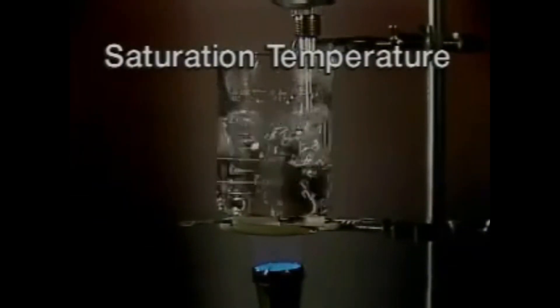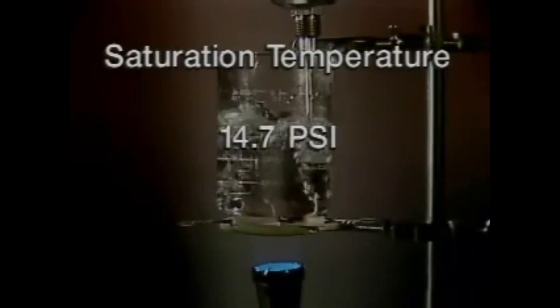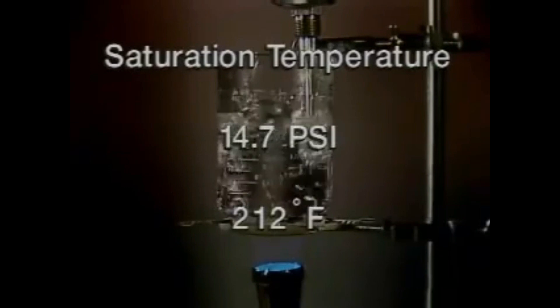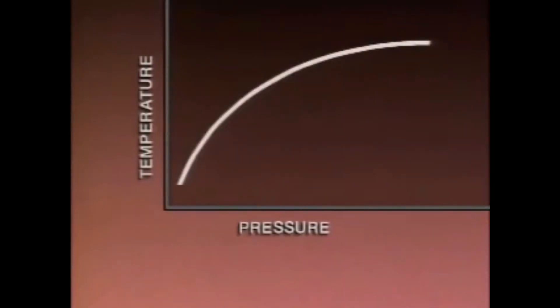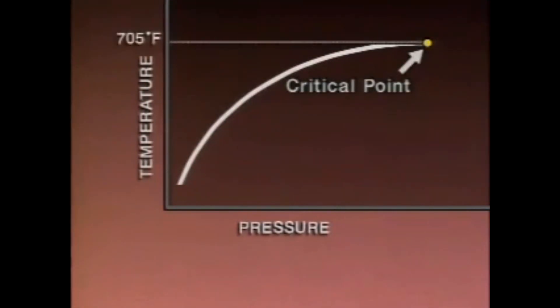At any given pressure, there is a corresponding temperature at which water will boil. This temperature is called the saturation temperature. For example, at standard atmospheric pressure, which is 14.7 PSI, the saturation temperature of water is 212 degrees Fahrenheit. When pressure increases, the saturation temperature also increases. At 1,000 PSI, the saturation temperature of water is 545 degrees Fahrenheit. When the saturation temperatures for water at different pressures are plotted on a temperature versus pressure chart, a line is formed showing the relationship between saturation temperature and pressure. However, this relationship only holds true up to a certain point. That point, called the critical point, is 705 degrees Fahrenheit and 3,206 PSI.